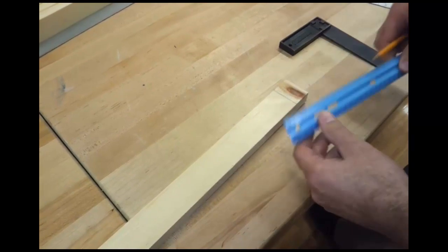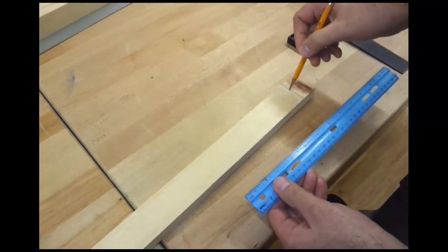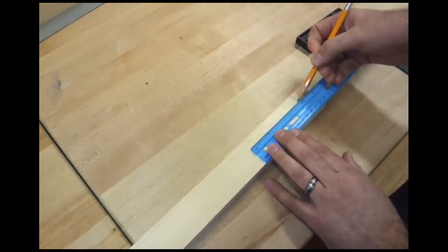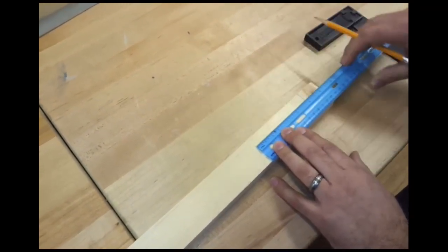The next thing that I'm going to do is with a ruler, I'm going to measure from this line over four inches. So I'm going to place the four on the line and then come back to zero and place a mark.